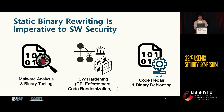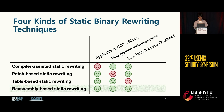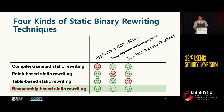Static binary rewriting is imperative to software security because it allows adding security features into binary without access to source code. This technique is often used for malware analysis, software hardening, and code repair. There are four kinds of static binary rewriting techniques. The first three are well known, so they are already employed in various fields.